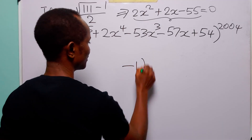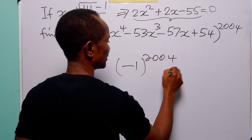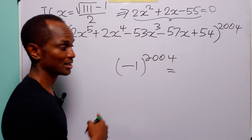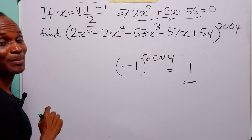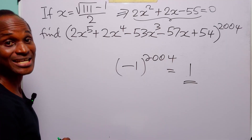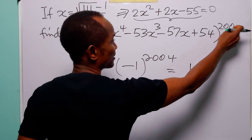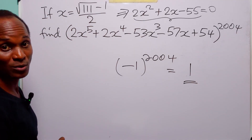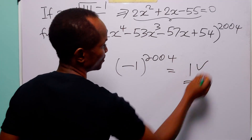The remainder is −1, so the value of the expression is −1. But the last part of the calculation is to find (−1)^2004. Since −1 raised to an even power equals 1, we have that the value of (2x⁵ + 2x⁴ − 53x³ − 57x + 54)^2004 when x = (√111 − 1) / 2 is equal to 1.